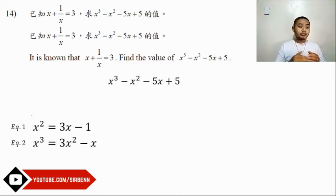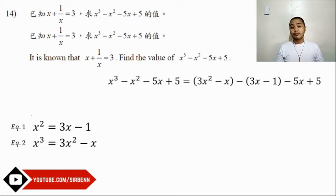x³ equals 3x² - x while x² equals 3x - 1. So x³ becomes 3x² - x, and x² becomes 3x - 1, as you can see on the screen.